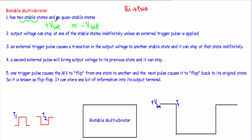For the sake of argument, let's say the output voltage is at plus Vsat. If I apply an external triggering pulse, this triggering pulse will cause a transition in the output voltage to another stable state. Because of the applied triggering pulse, our output voltage will have a transition from plus Vsat to minus Vsat level. It will be stable at this minus Vsat voltage as well. An external triggering pulse causes a transition in the output voltage to another stable state, and it can stay at that state indefinitely.